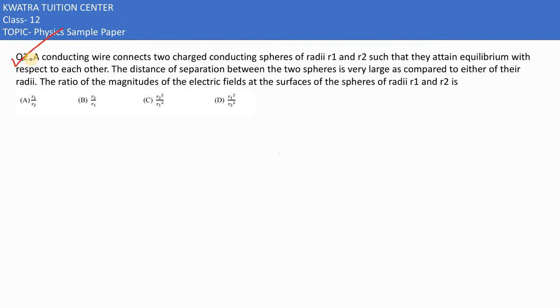Let's have a look at the second one. It says a conducting wire connects two charged conducting spheres of radii R1 and R2. Those spheres are there with radius R1 and R2, and they attain equilibrium with respect to each other.